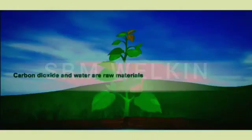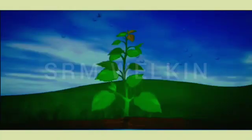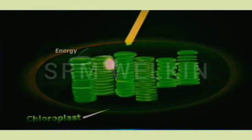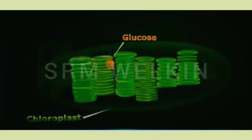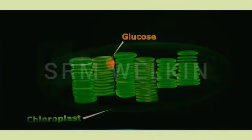Carbon dioxide and water serve as raw materials for photosynthesis. Plants absorb carbon dioxide from the air. The carbon dioxide enters the plant through pores called stomata present on the surfaces of their leaves. From the stomata, the carbon dioxide travels to the chloroplasts, where it combines with water to form glucose. The combining of carbon dioxide and water utilizes the energy stored in the chloroplasts.